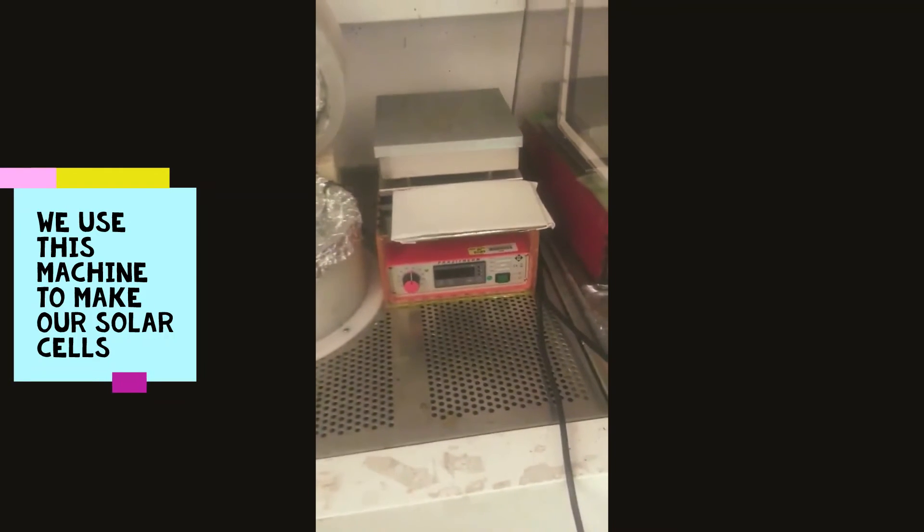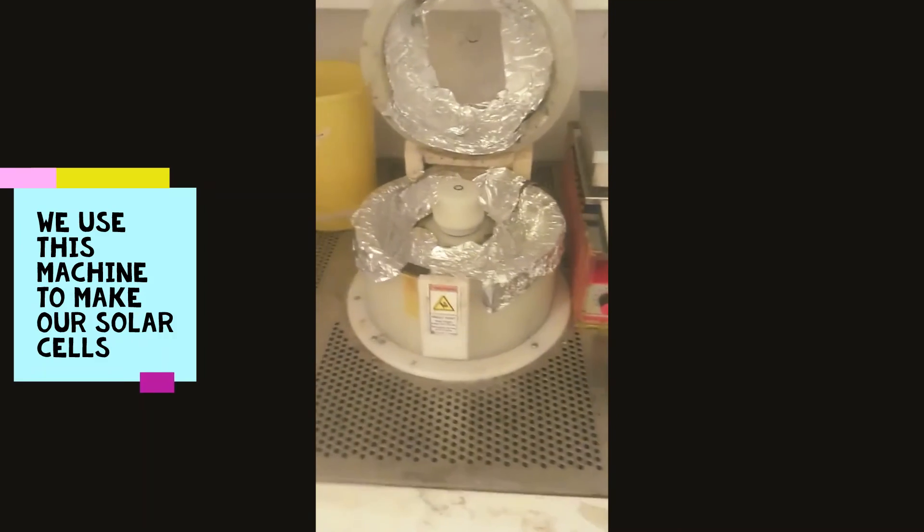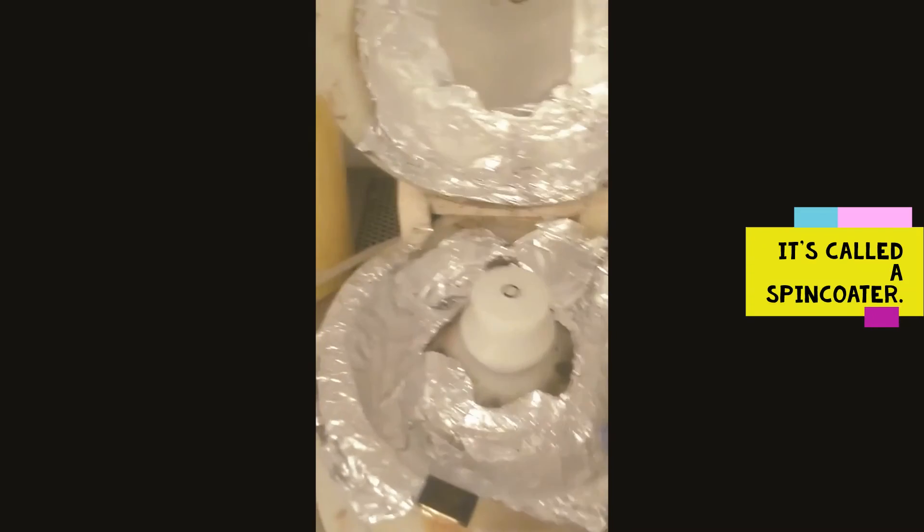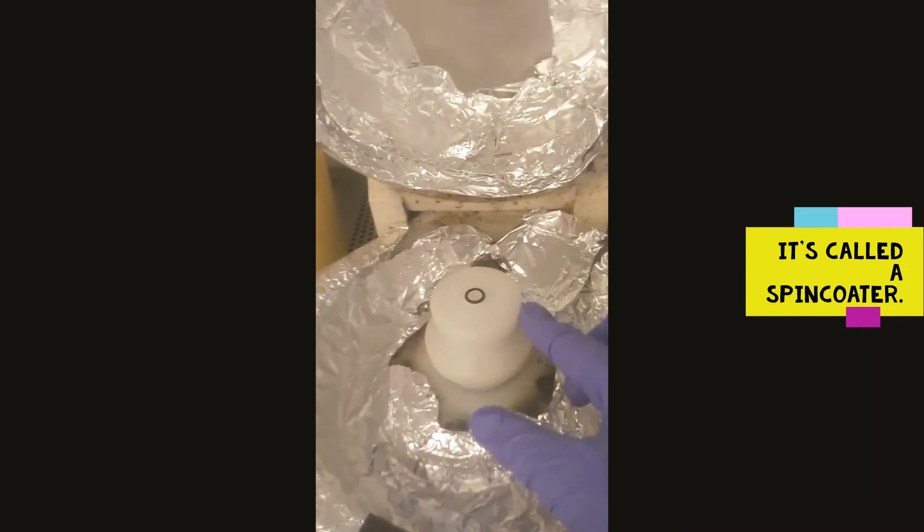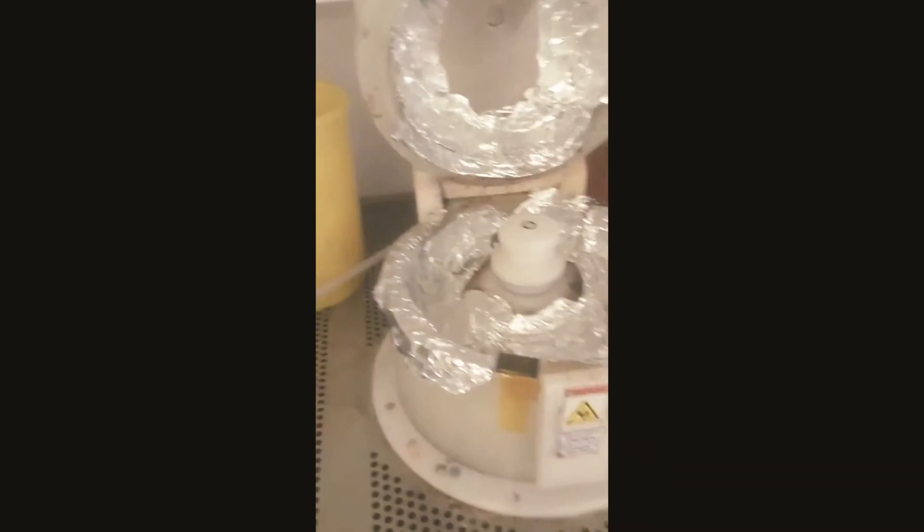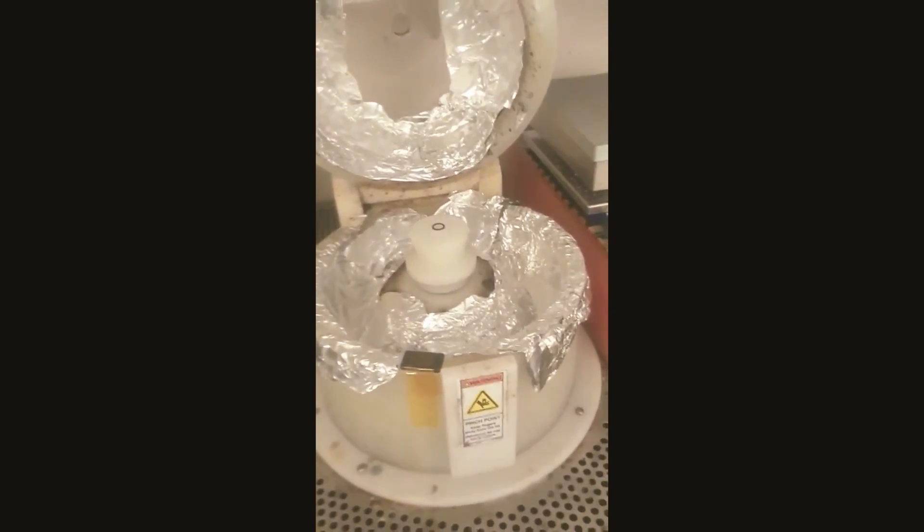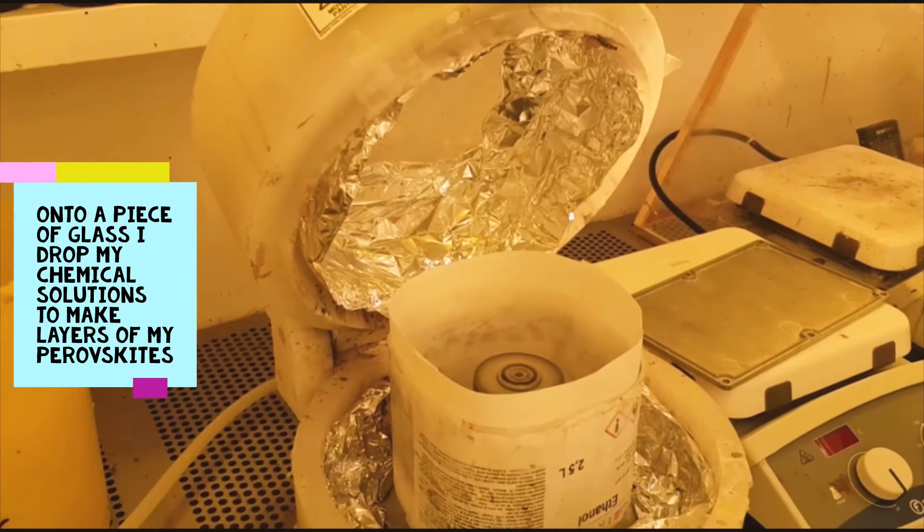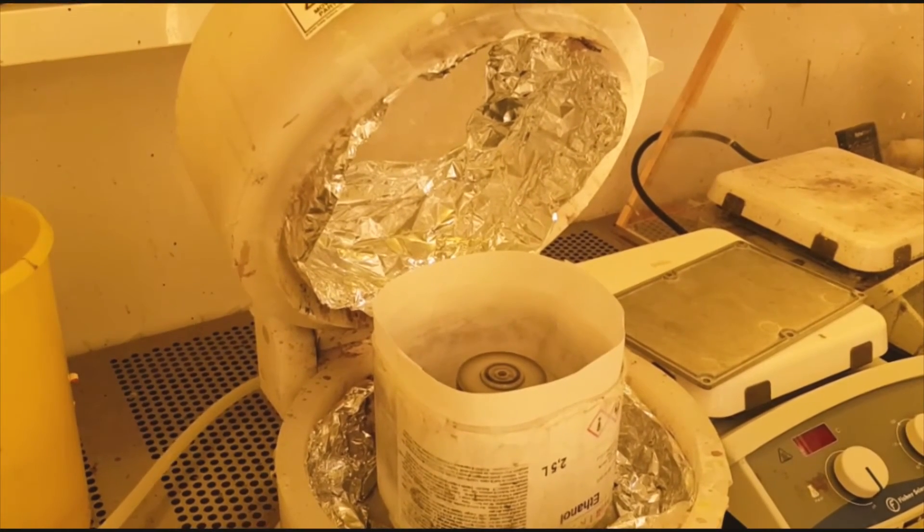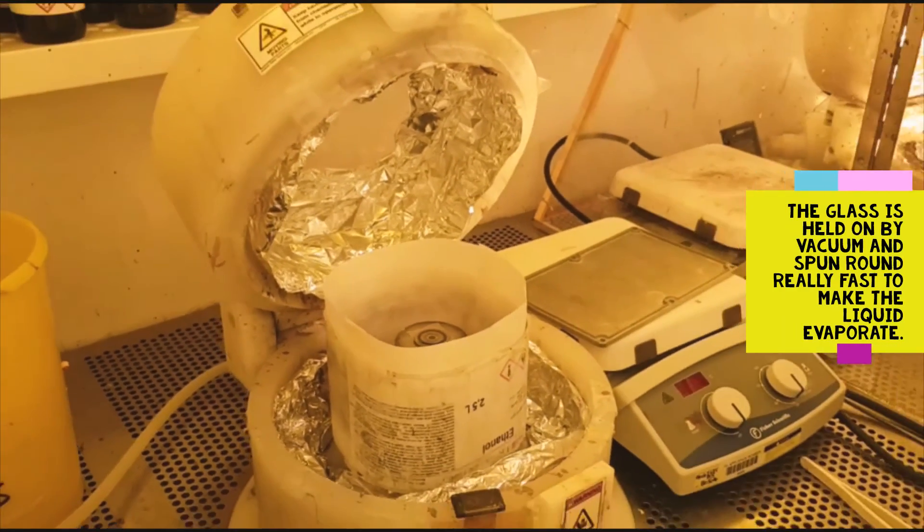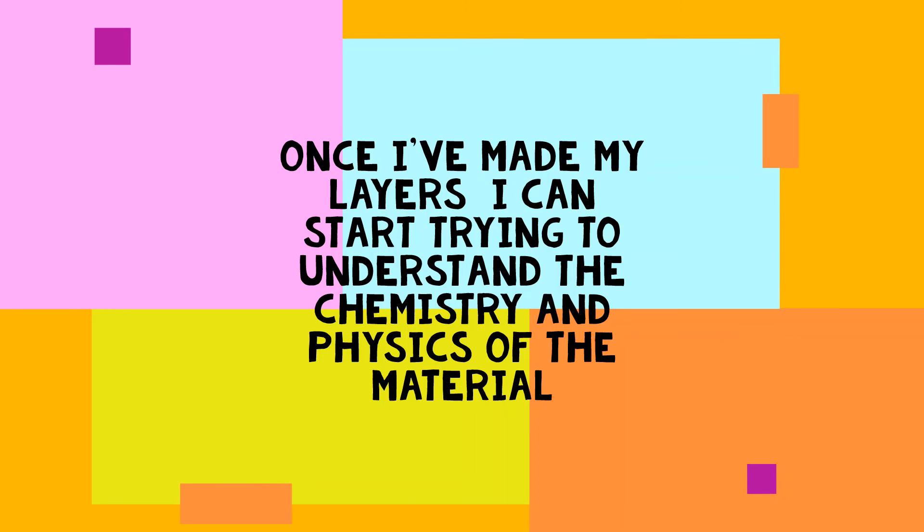So here I'm showing you something called a spin coater. Basically what we do here is we make our perovskites onto glass substrates, and this glass is going to form the backbone of our solar cell. Here I've just added some solution. I'm showing you it working. Basically this little chuck kind of spins around super fast, and the speed drives off the solution—it makes it evaporate—and you're left with a thin layer of our perovskite.